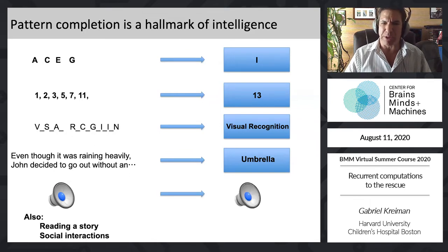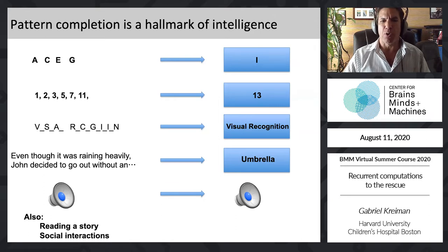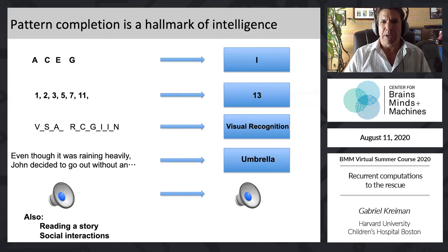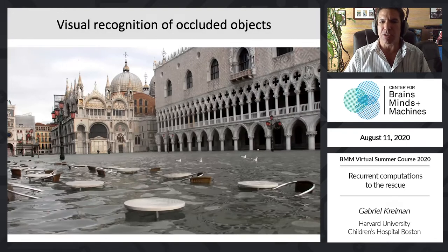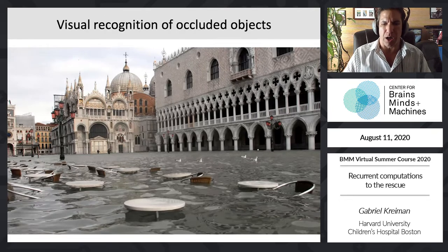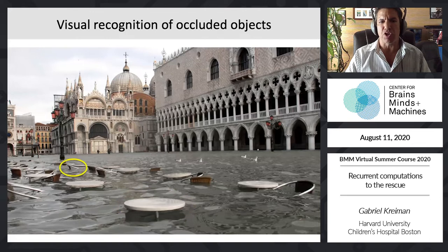We do pattern completion when we read a story, in social interactions — we may interact with someone for five seconds and form an initial opinion of who they are. That opinion may be right or wrong, but our pattern completion abilities are quite remarkable. Pattern completion is ubiquitous in everyday vision, as evidenced by our ability to recognize heavily occluded objects — you can get a good sense of what objects are even from just a handful of pixels.